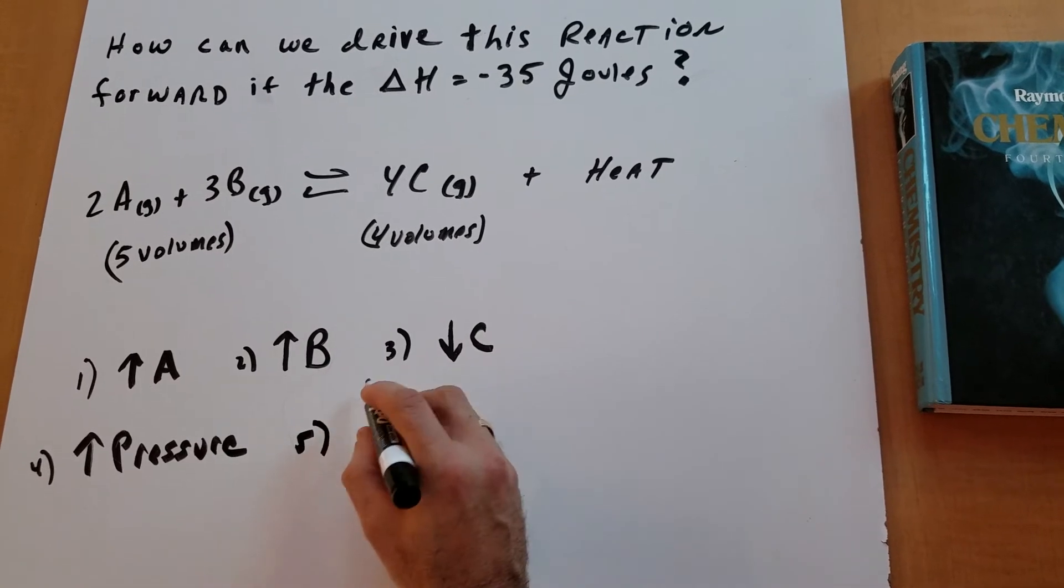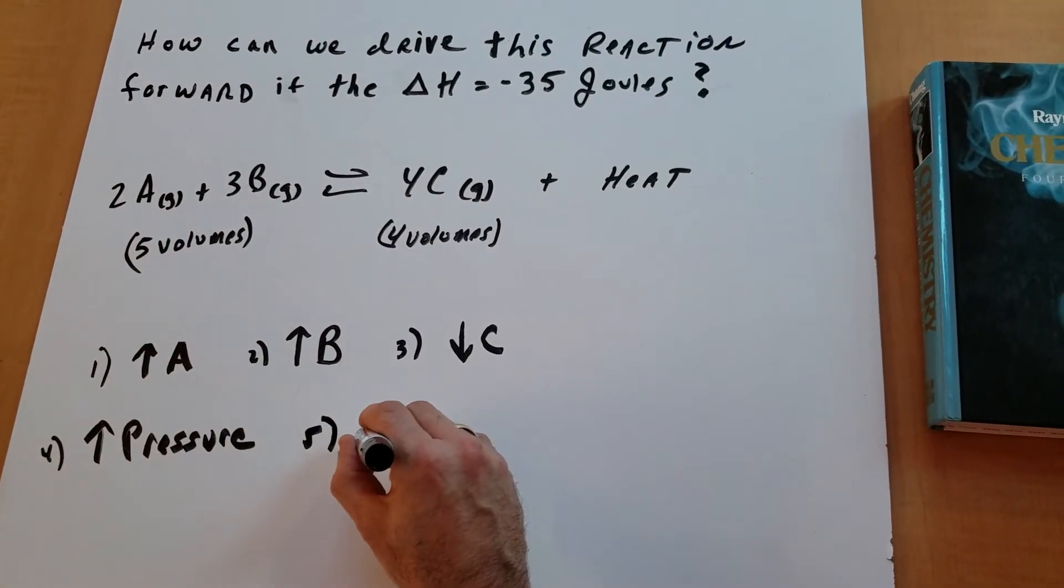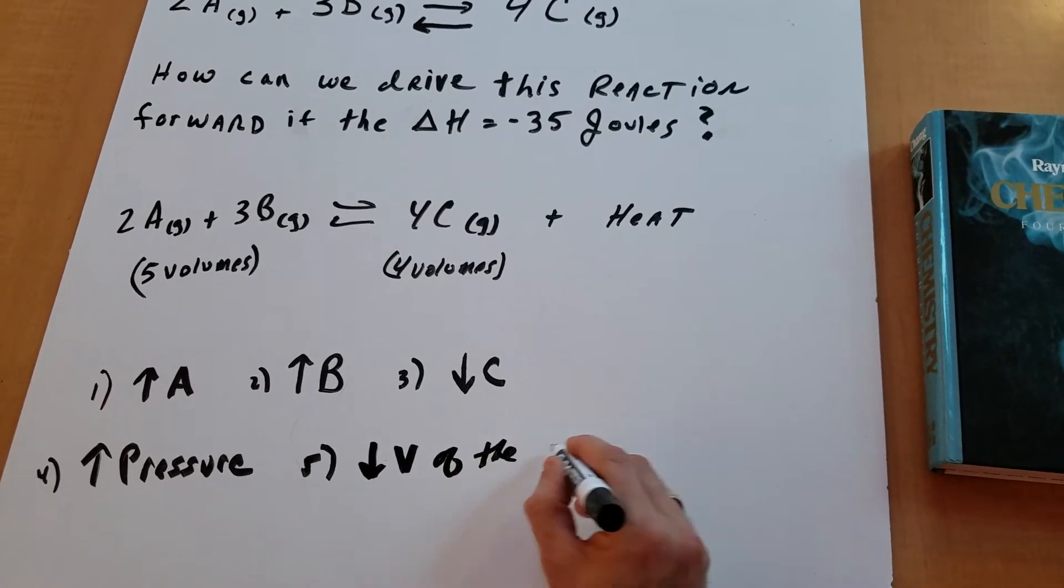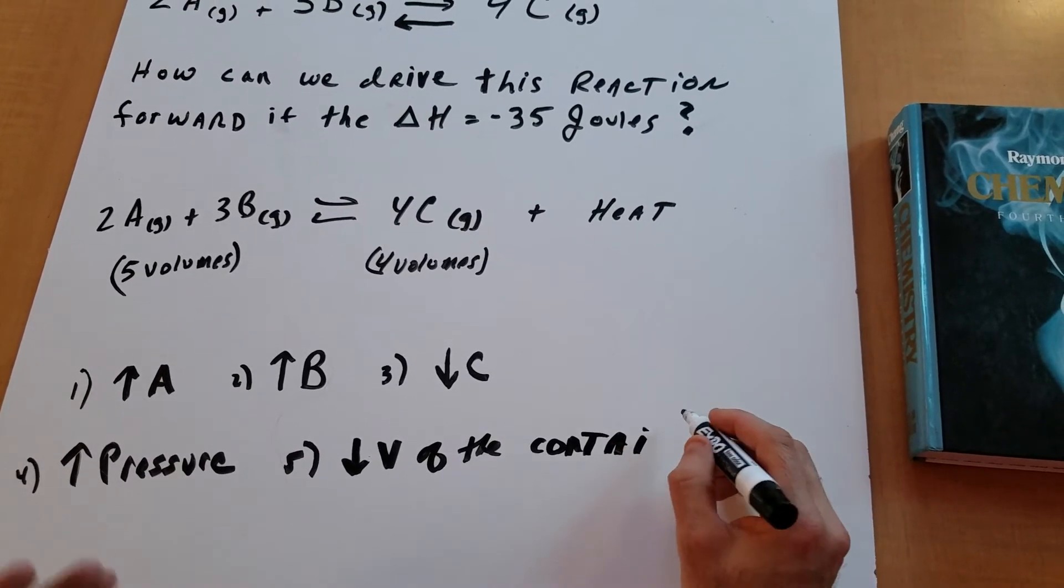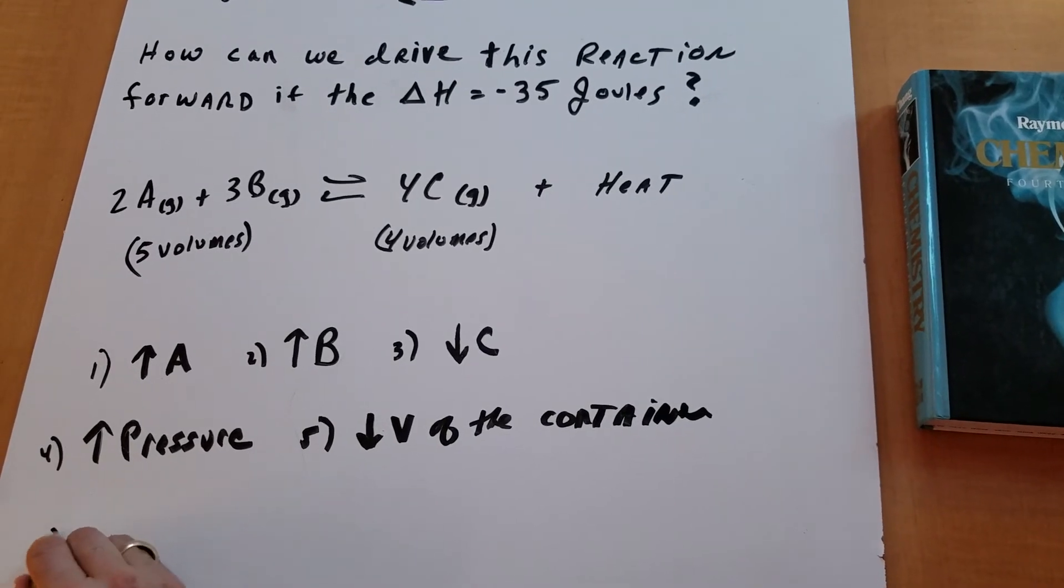Likewise, I could just say since I want to go to the lower volume side, I can just simply say decrease the volume of the container. If you decrease the volume of the container, that would be the same thing as saying you're increasing the pressure.